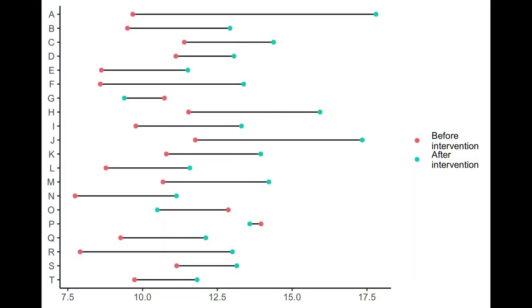Perhaps the best tool that we have to indicate connectedness and grouping is to use a line to connect your points. So we can have two points and if we connect them with a line, that signals very clearly to your audience that those two points are connected. This type of plot is called a barbell plot or a dumbbell plot.